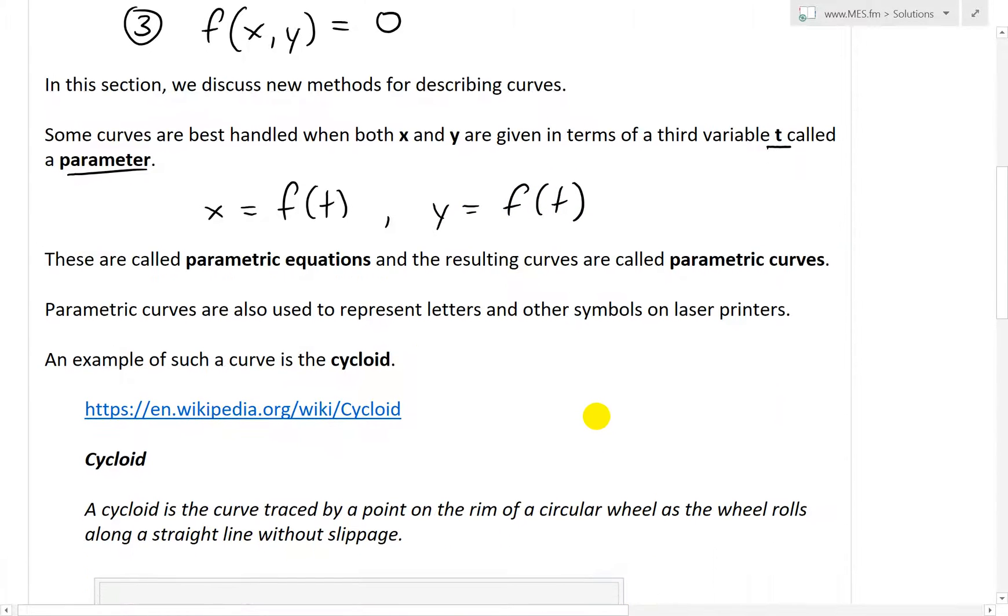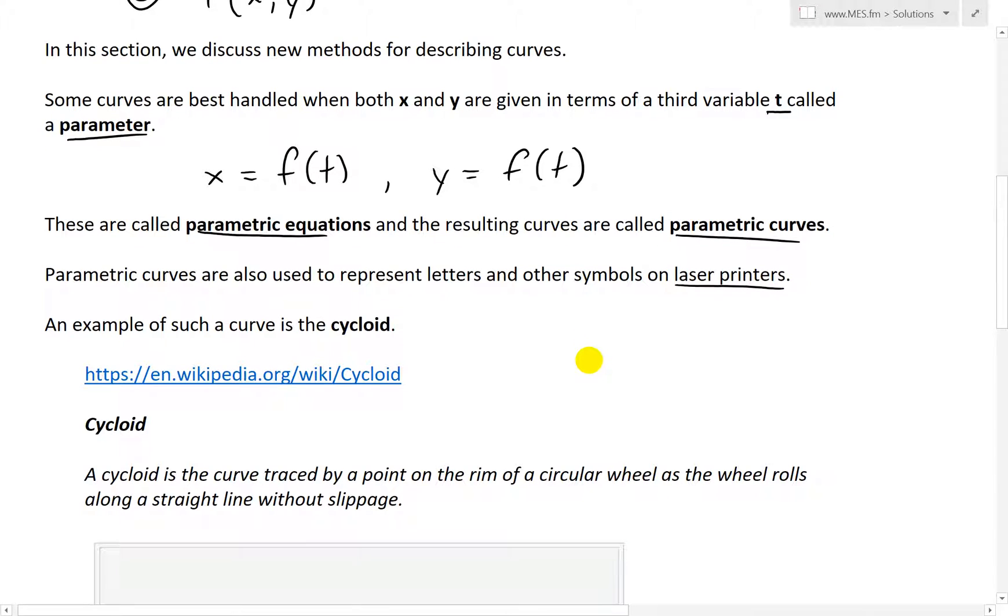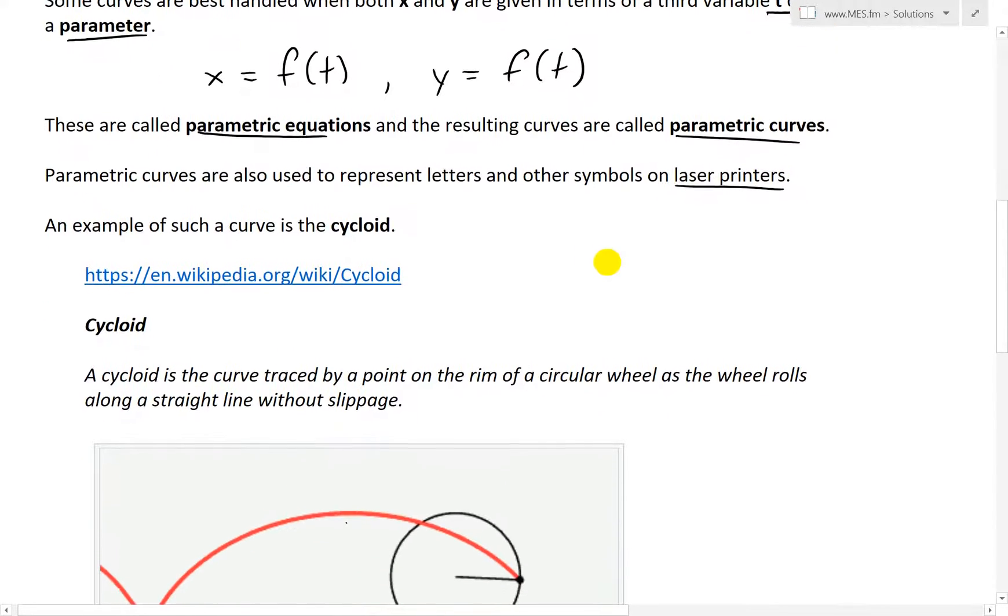These equations are called parametric equations, and the resulting curves are called parametric curves. What's interesting is parametric curves are also used to represent letters and other symbols on laser printers, so when you print stuff they're using these kind of equations. We'll go over this and examples on it in a later video, so stay tuned for that. It's pretty interesting stuff.